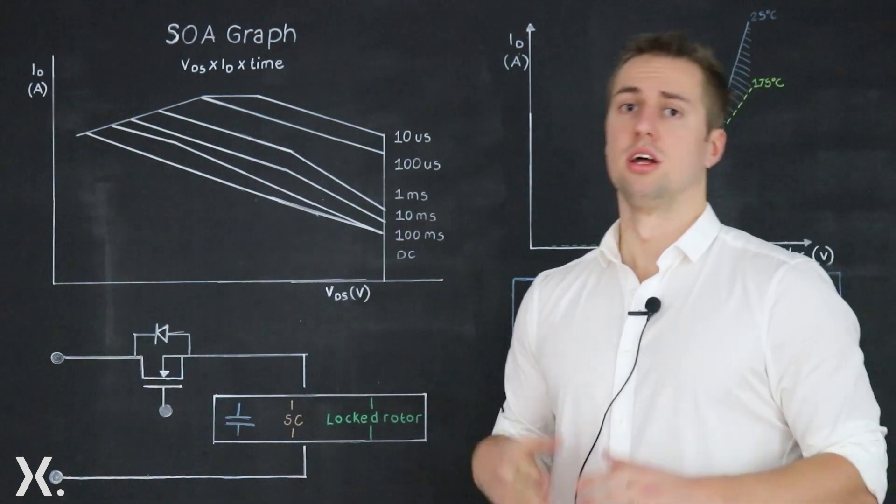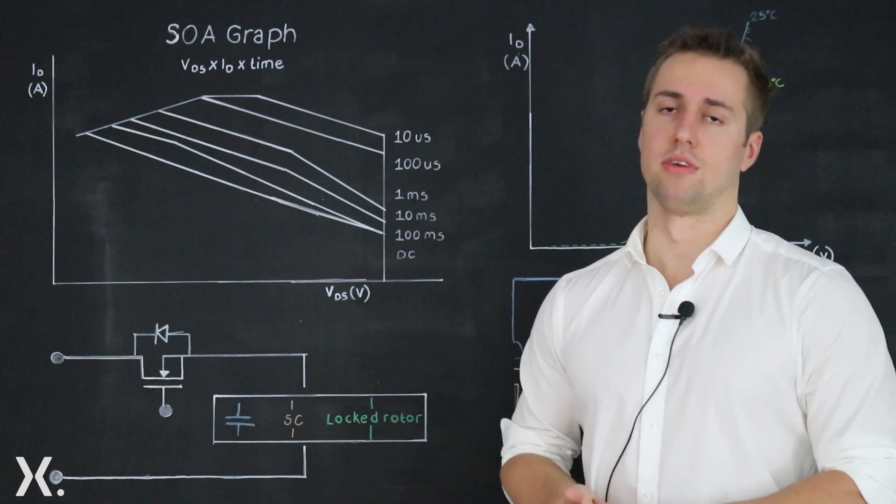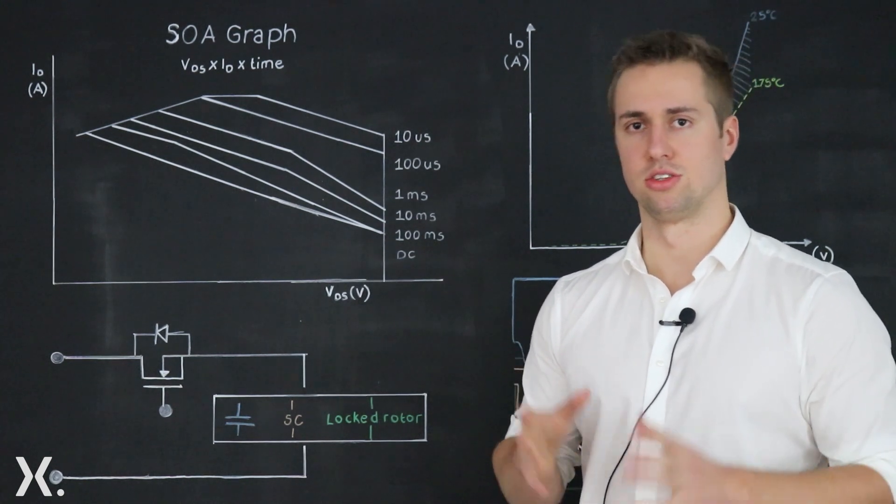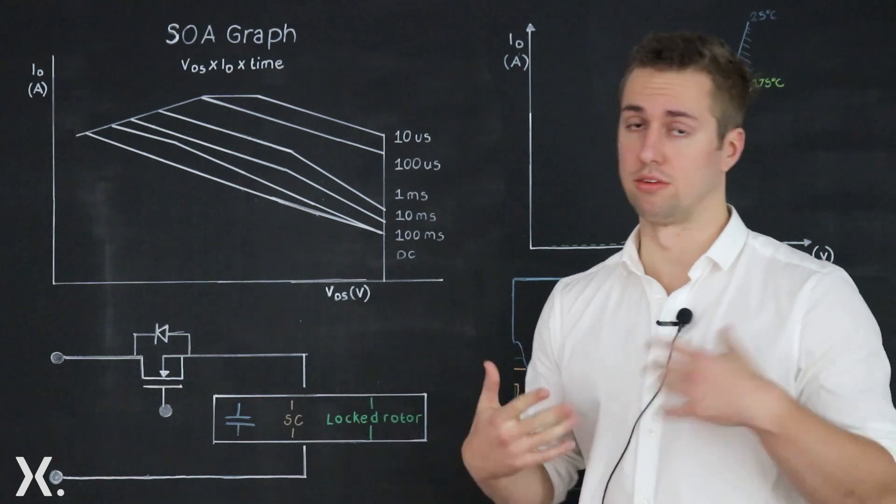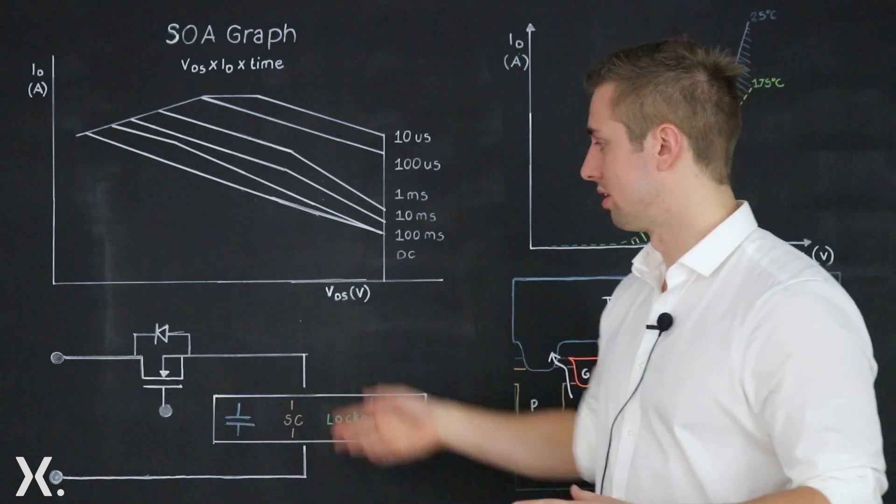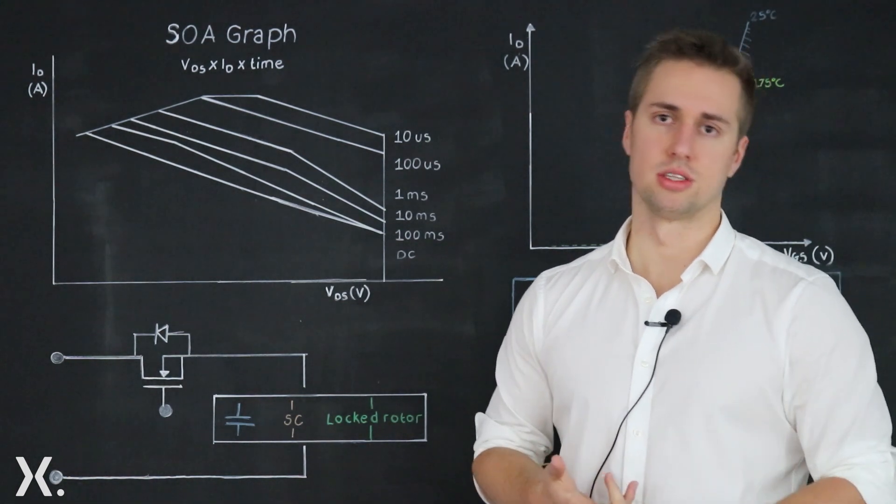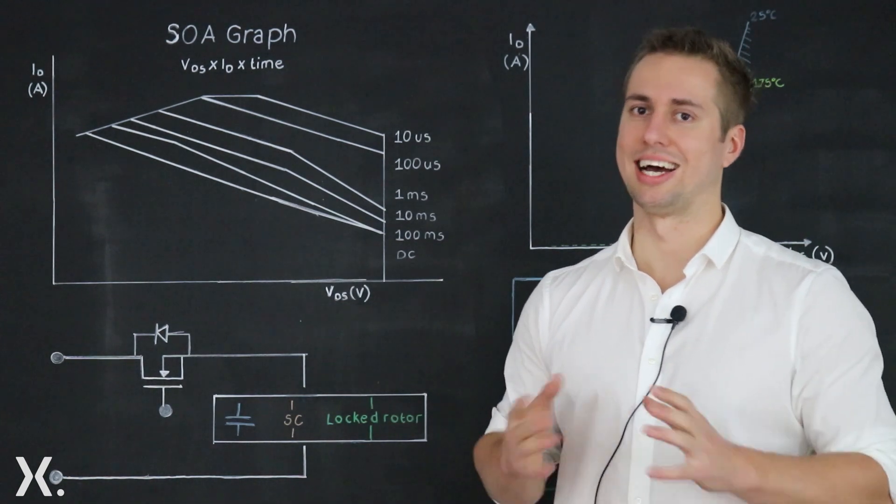As mentioned, SOA becomes important whenever the device is put into linear mode. Now what is linear mode? Linear mode is whenever the device is transitioning between on off states or vice versa. This means that when the gate source voltage is applied there is a state where there's a large current and a large voltage across the device at the same time.